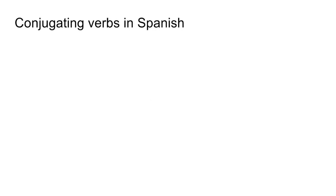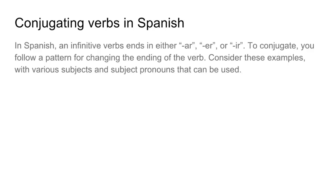Spanish is way different. When you're conjugating verbs in Spanish, first of all, there are three different types of infinitives: AR verbs, ER verbs, and IR verbs. And to conjugate them, you need to follow patterns for changing the endings of the verbs. I'm going to share an example of an AR verb, an ER verb, and an IR verb, changing the subjects through first, second, and third person singular and plural.